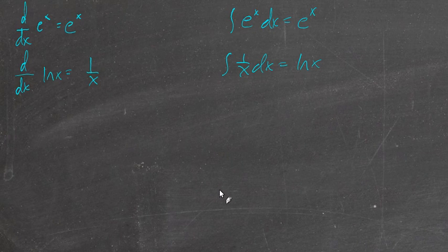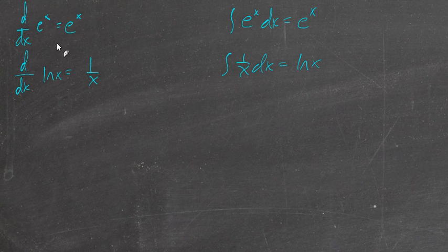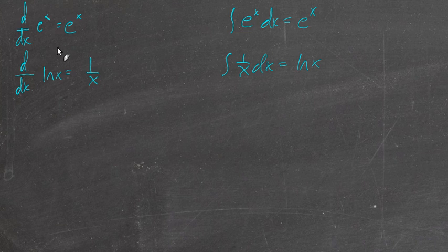In the previous section, 5.4, we learned about this really cool function, e to the x, and how it's its own derivative, which should still be blowing your mind. You still shouldn't be able to believe that. And if it's its own derivative, then obviously it's its own antiderivative.